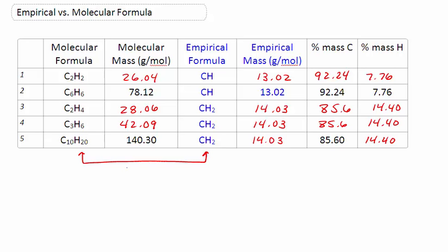I would have to say that the empirical formula is the smallest ratio of atoms in the molecule. And if I was really smart, I might even say the smallest whole number ratio.